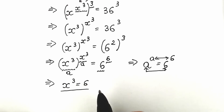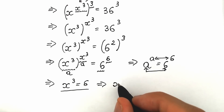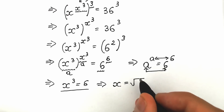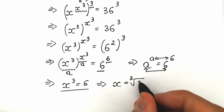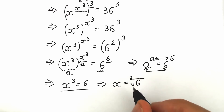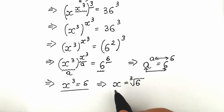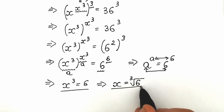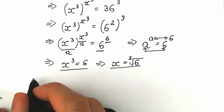From x cubed equals 6, we get x equals the cube root of 6. A lot of students don't trust this solution, so for those who don't, I can easily show and prove this. Let's check our root and confirm this is the correct solution.